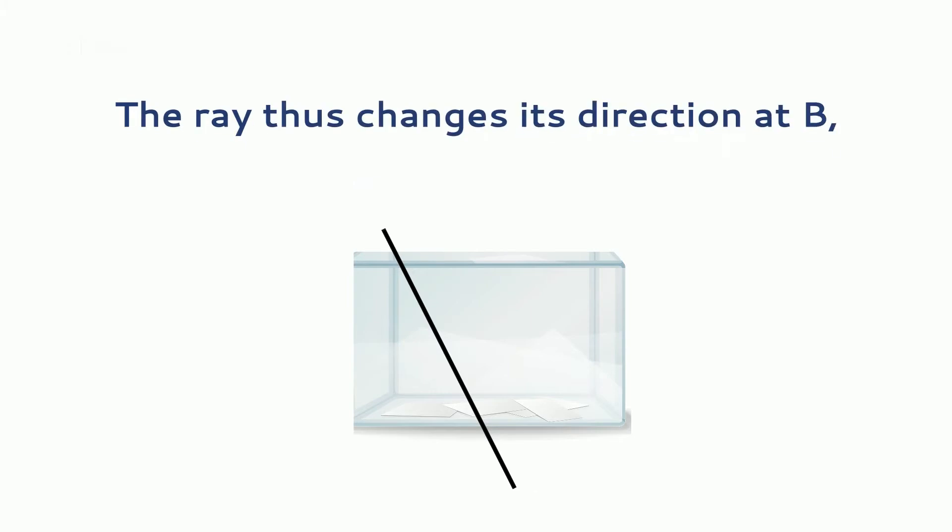Suppose a ray of light travelling along a straight line AB in air is incident on the plane surface PQ of a block of glass. The ray will now pass into glass and travel along direction BC different from AB. The ray thus changes its direction at B, that is, at the surface of separation between air and glass. Here AB is the incident ray and BC is the refracted ray.